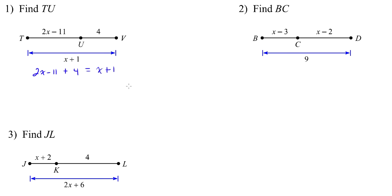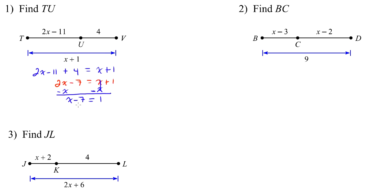Now let's combine like terms. Negative 11 plus 4 is negative 7, so this becomes 2x minus 7 equals x plus 1. We subtract x from both sides, giving us x minus 7 equals 1. Then we add 7 to both sides, and we get x equals 8.